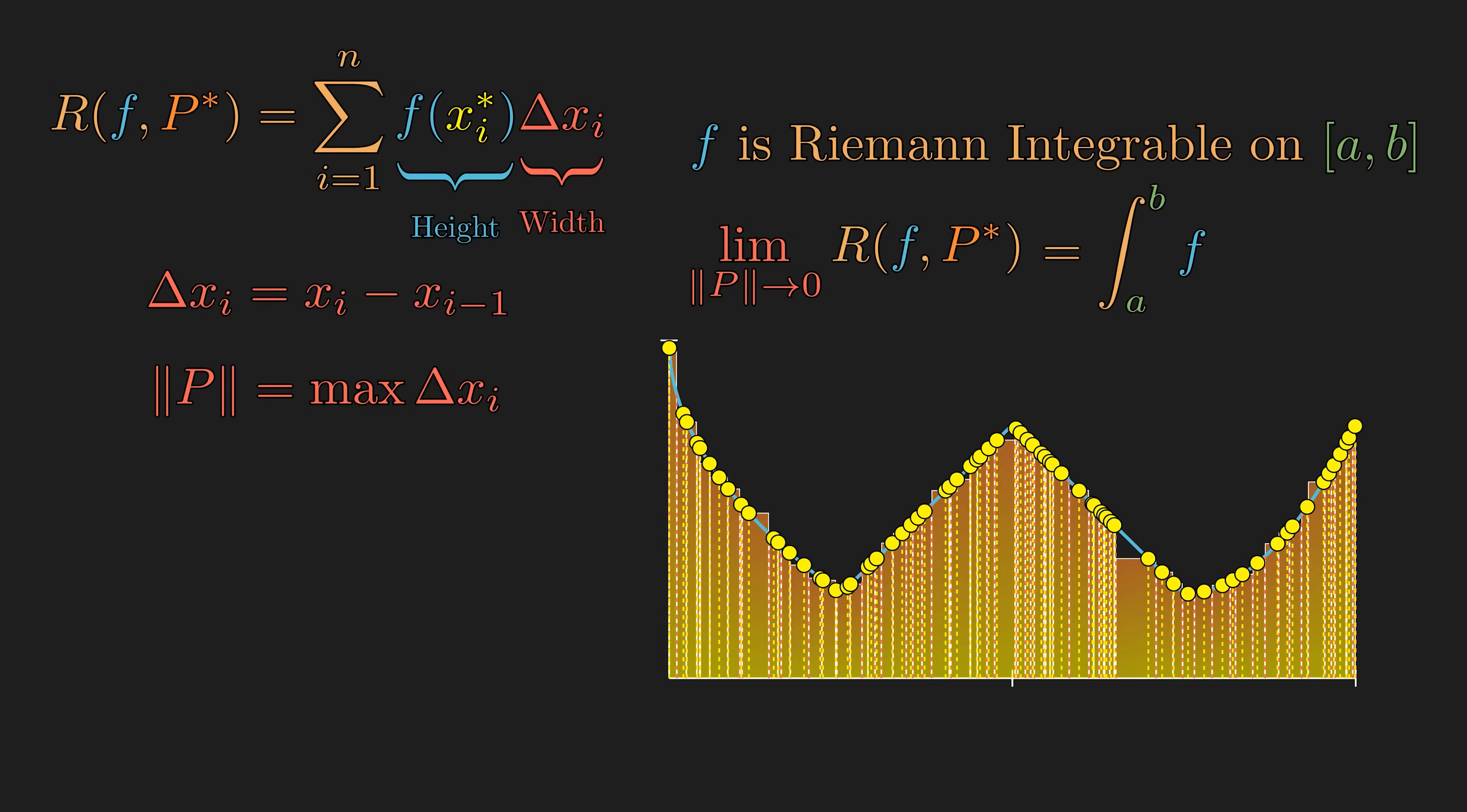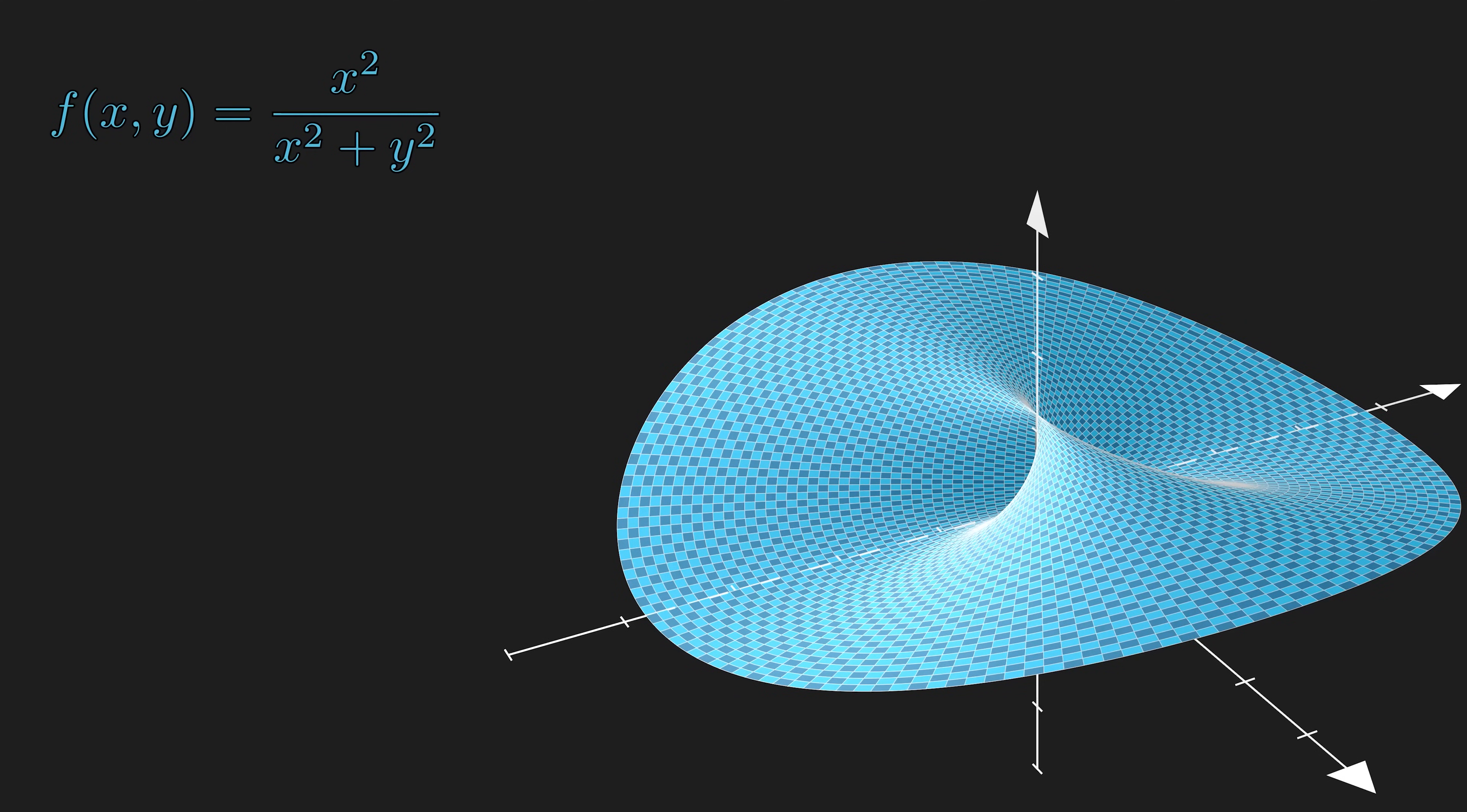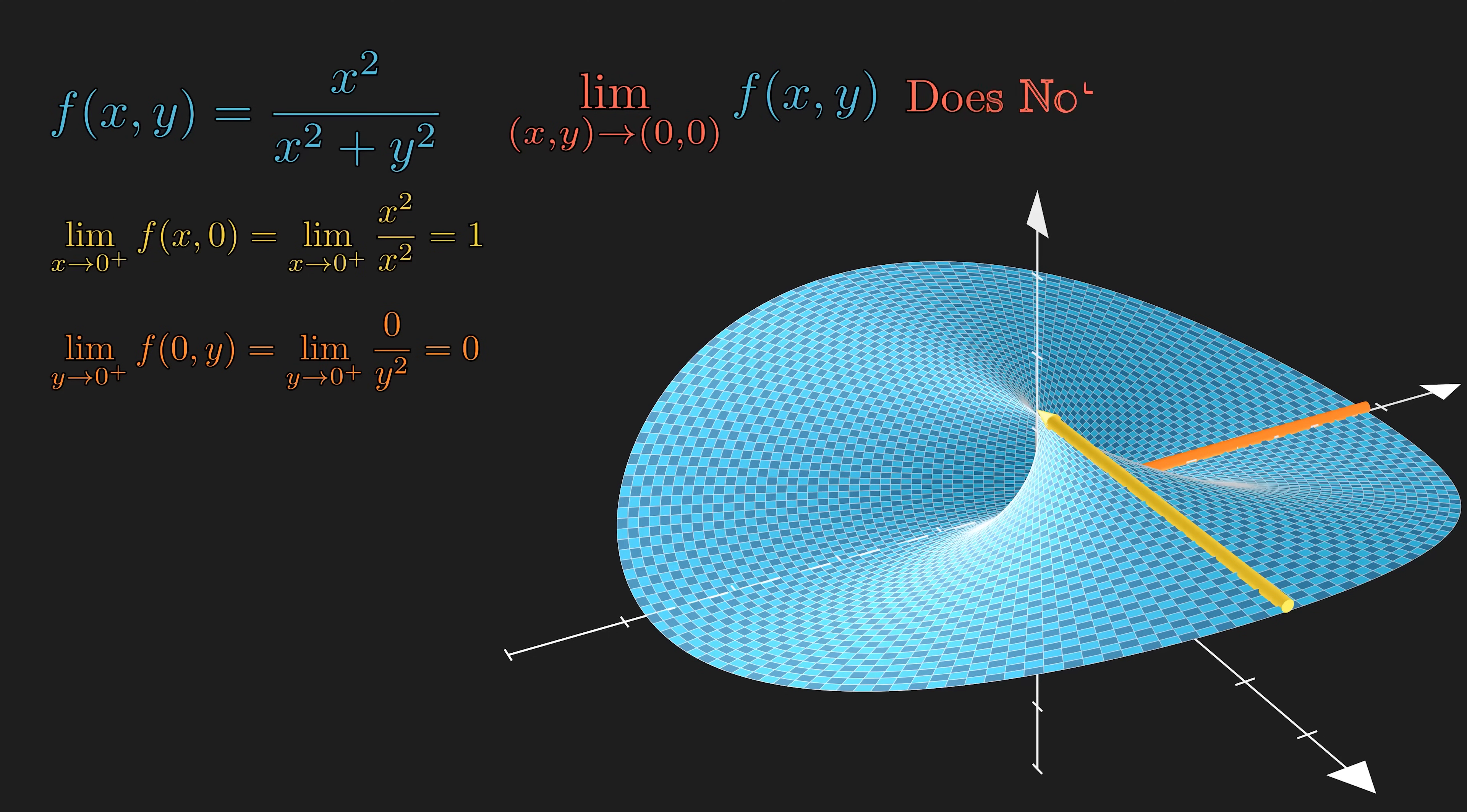To truly understand the meaning of this, we want to examine a case where the limit fails to exist. Let's take a quick look at this example to review the most common technique to prove that a limit does not exist. The limit of this two-variable function as the ordered pair (x, y) approaches the origin does not exist. To show that, the limit along the positive x-axis is one, and the limit along the positive y-axis is zero. If we can demonstrate that the limit could approach at least two different values along two different paths, then the limit does not exist.